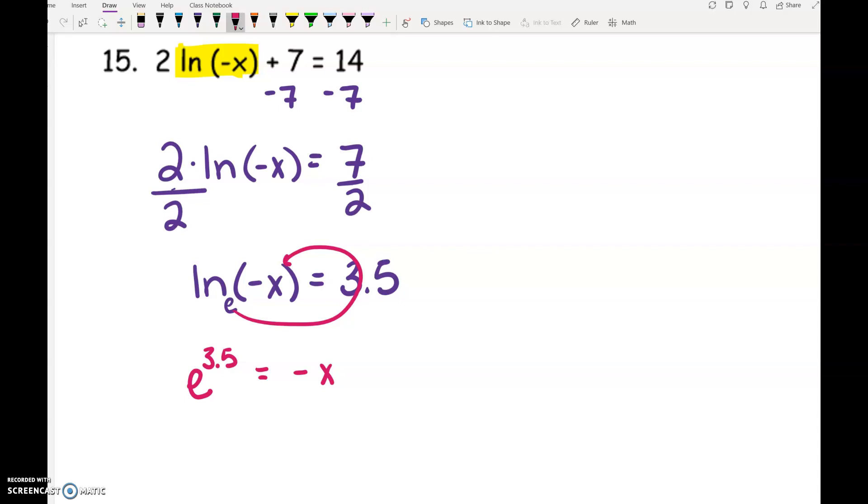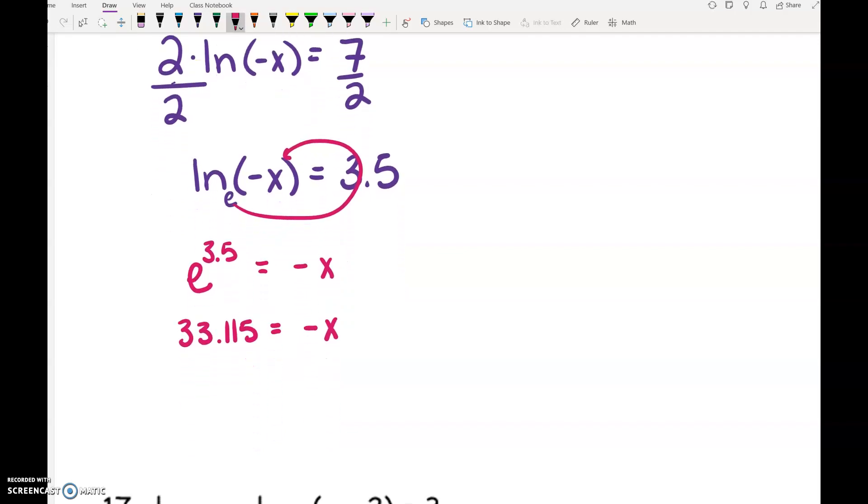So in my calculator, E raised to the 3.5. And then I'd have to divide by negative 1. So x actually equals negative 33.115.